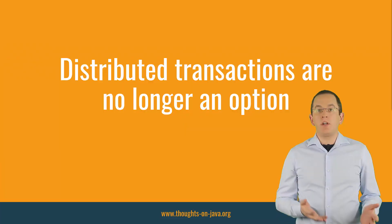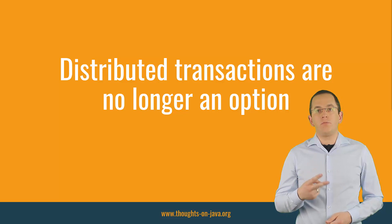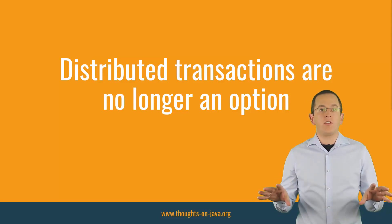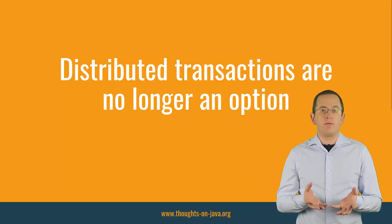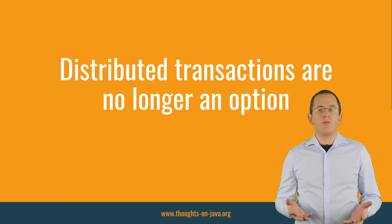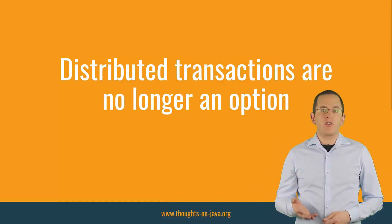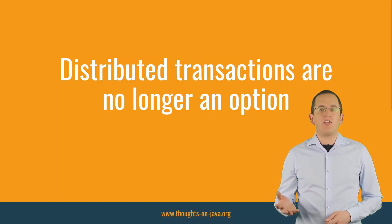In the past, when we built monoliths, we used distributed transactions to avoid this situation. Distributed transactions use the two-phase commit protocol. It splits the commit process into two steps and ensures the ACID principles for all systems. But we don't use distributed transactions when building microservices — these transactions require locks and don't scale well. They also need all involved systems to be up and running at the same time.